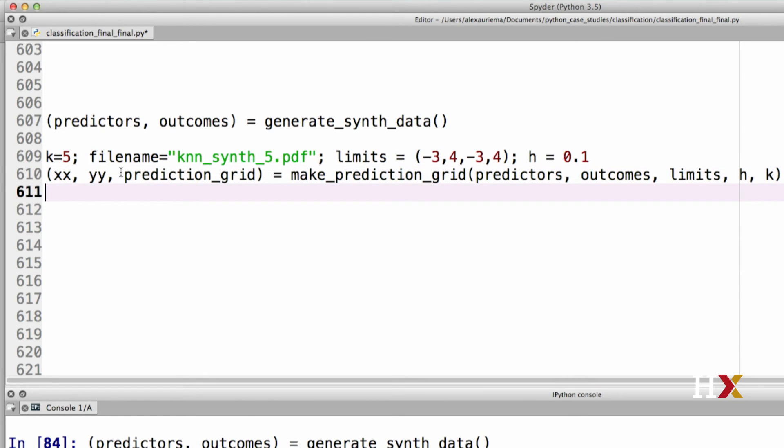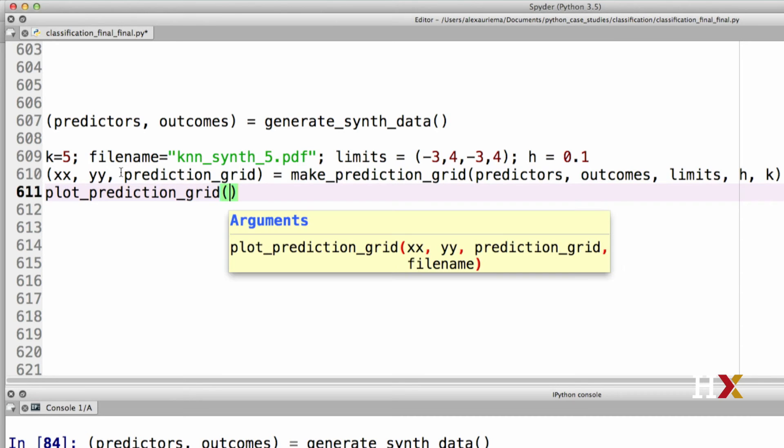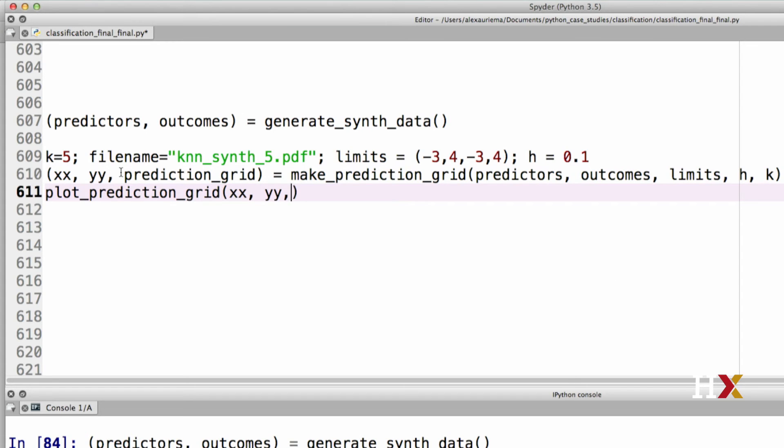Then finally, we'll call the plot_prediction_grid. We'll provide xxy prediction grid and file name as inputs. Let's try running the code.